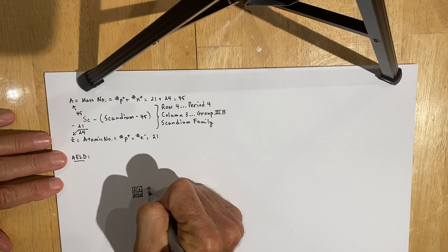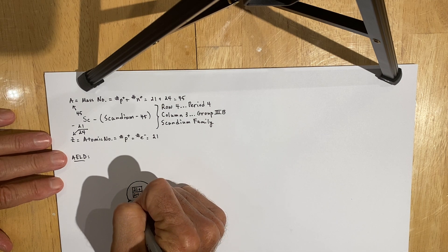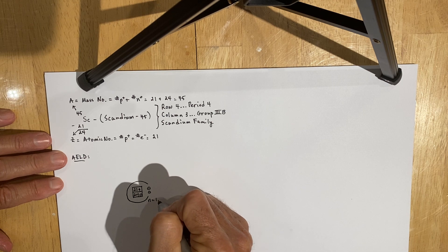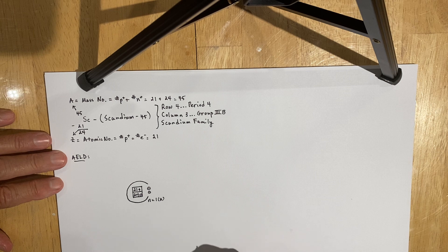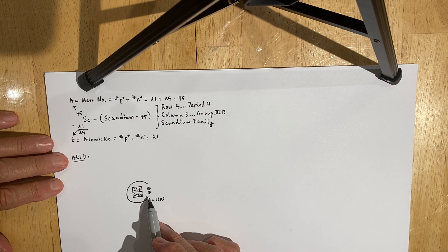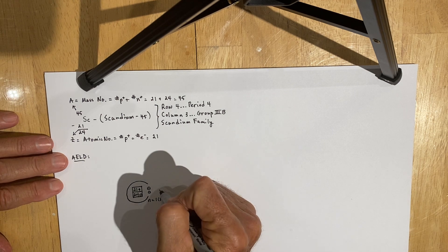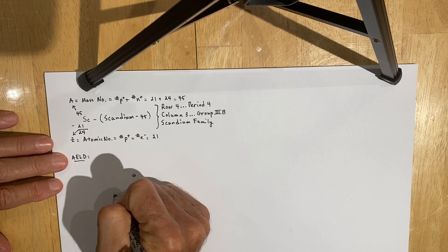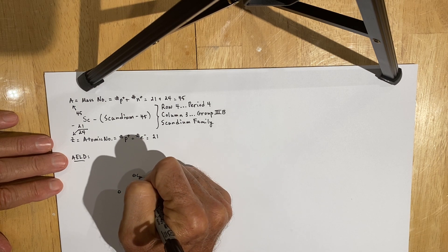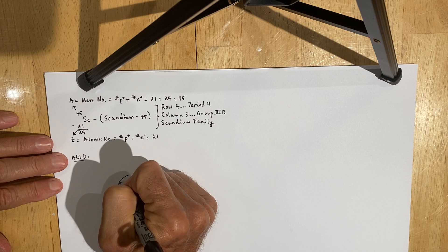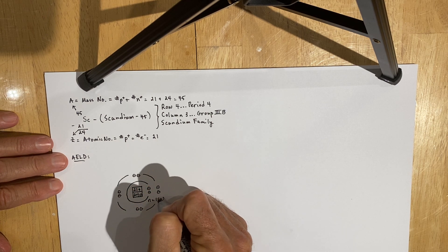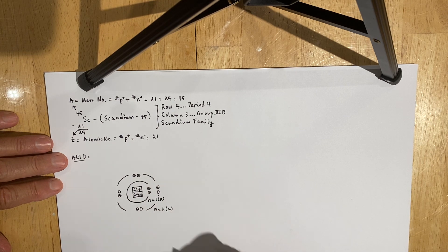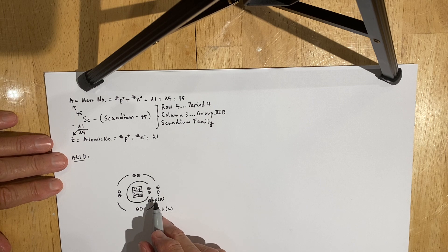We set out to place 21 electrons. The first two go in the first energy level, known as energy level N equals 1, also known as the K shell. The first energy level has one orbital and an S sub-level that holds two electrons. Once that's filled by the Aufbau principle, we move to the second energy level, which has an S sub-level. Once the S sub-level is filled, we begin to fill the P sub-level on the second energy level by Hund's rule — each orbital in a sub-level gets one electron before you pair them up. This is the N equals 2, or L shell. We now have two electrons on the first and eight on the second energy level.